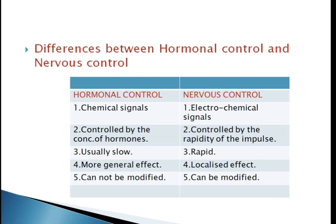The next property is the capacity for modification. Hormonal control cannot be modified — there is no learning from previous experience. Whereas nervous control can be modified by learning from previous experience.